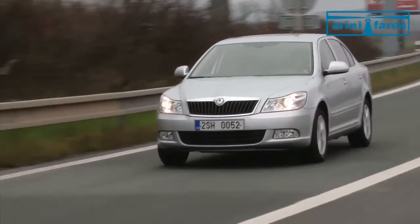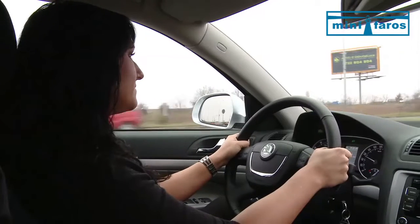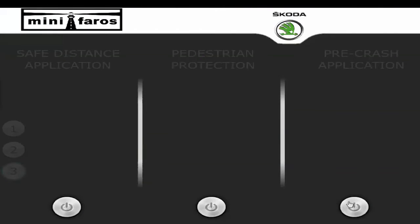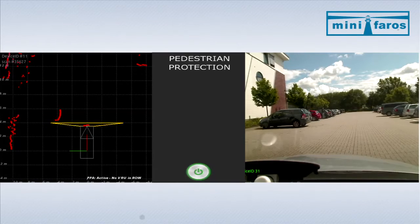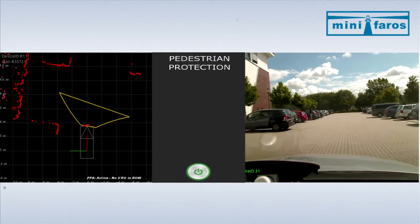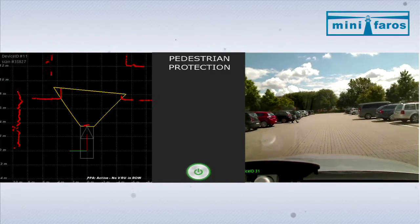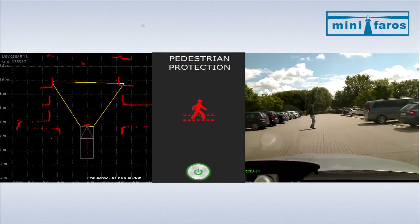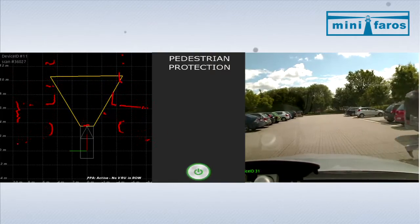Additionally, three applications for passenger cars have been developed and demonstrated within the project. The pedestrian protection system detects, tracks and classifies pedestrians and initiates measures to avoid a collision or mitigate the consequences.